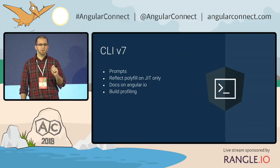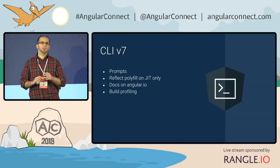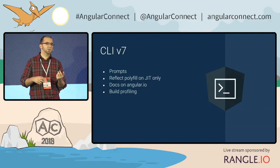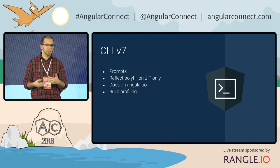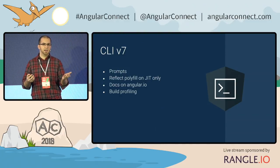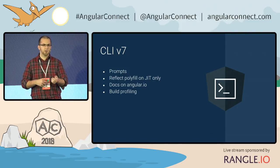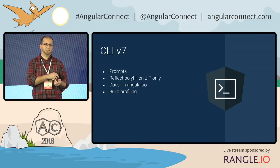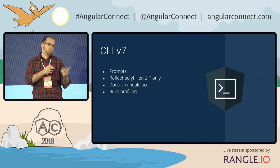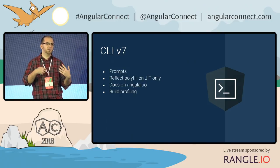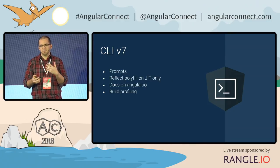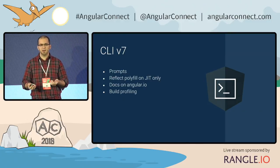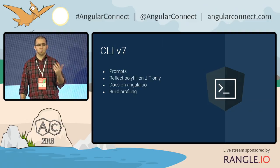We've added a flag to the builds so you can actually profile the builds. This is useful when you update the CLI and find your build is taking twice as long. This usually leads to issues being filed on the issue tracker and some back and forth. We added a flag to make it easier for you to profile your build and send it over to us so we can look into it, because sometimes these performance problems are really hard to diagnose and are very project-specific.